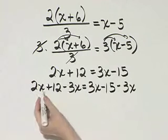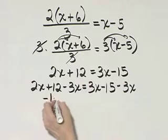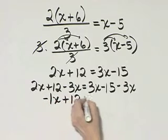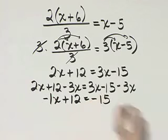You will still solve correctly. 2x minus 3x, that's negative 1x, or negative x, plus 12, is equal to, the 3x is subtracted out, and I have negative 15.